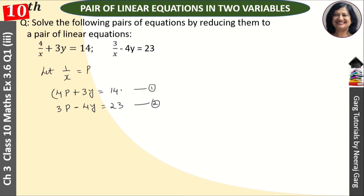We'll use the elimination method. To eliminate p, we multiply the first equation by 3 and the second equation by 4.